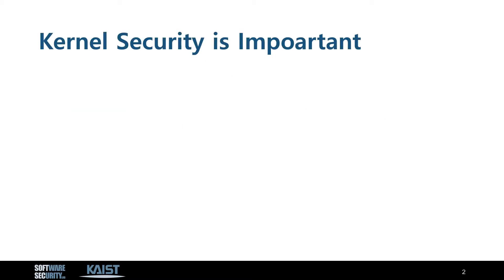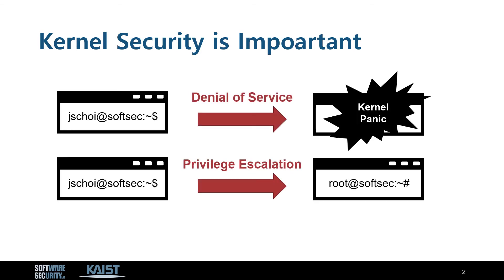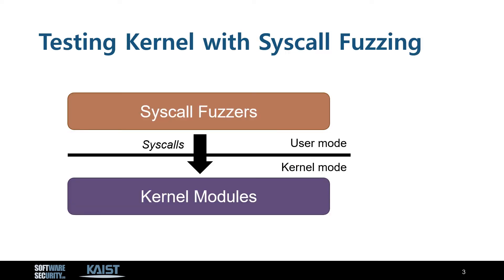Security bugs in kernel code can be critical, because they allow an attacker to shut down or even take over the victim system. Therefore, there have been many syscall fuzzers that try to find kernel bugs. However, most of these fuzzers are for Linux, where syscall type information is available.